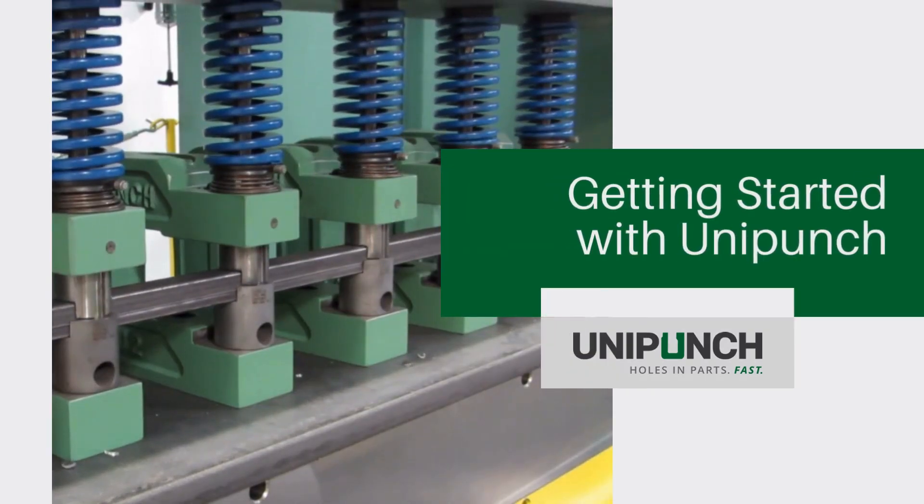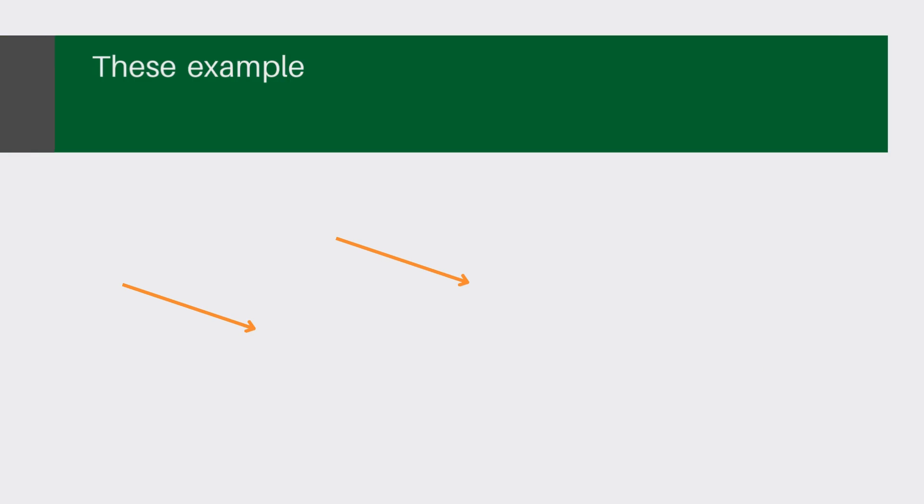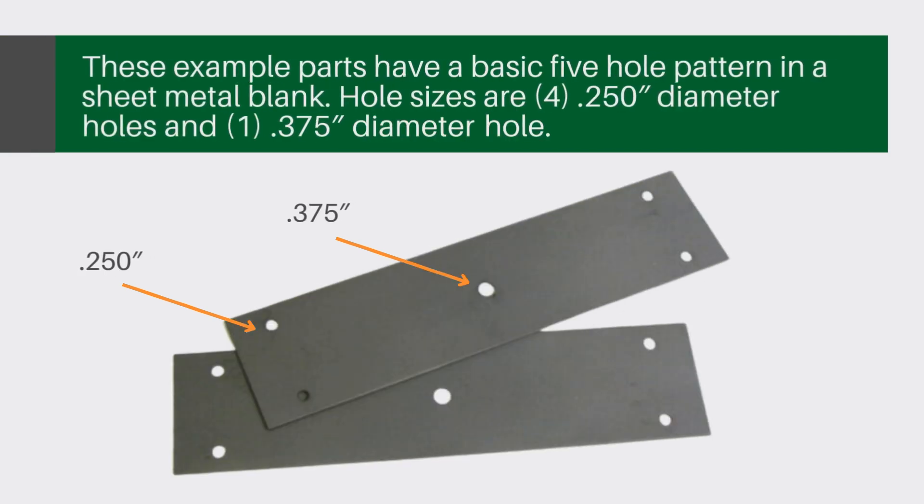Follow along to learn how to punch a specific hole pattern with UniPunch tooling. These example parts have a basic five hole pattern in a sheet metal blank. Four of the holes are quarter inch in diameter and one is three eighths inch in diameter.